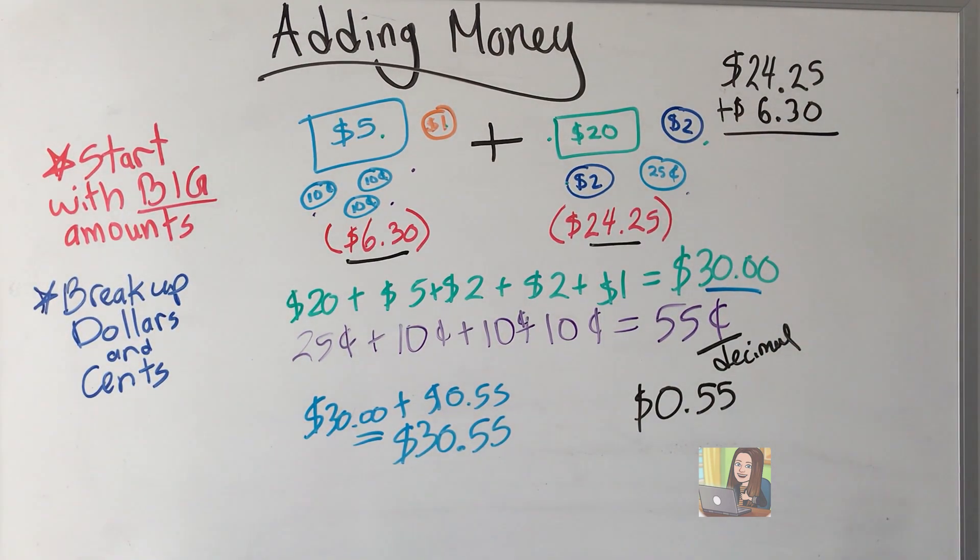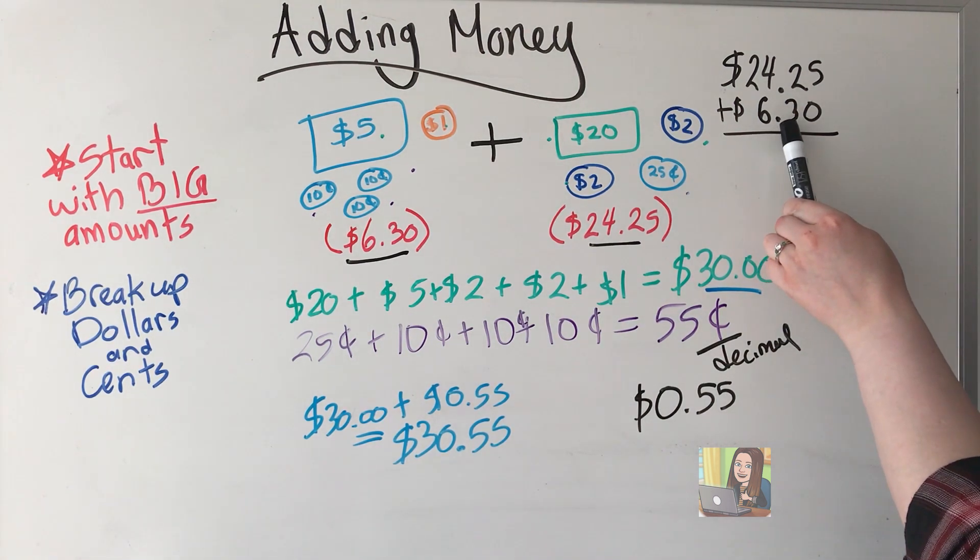The most important part about stacking with decimals and money is to line up the decimal place. That is the crucial step for adding and subtracting decimals.